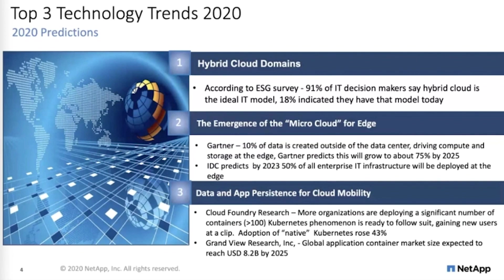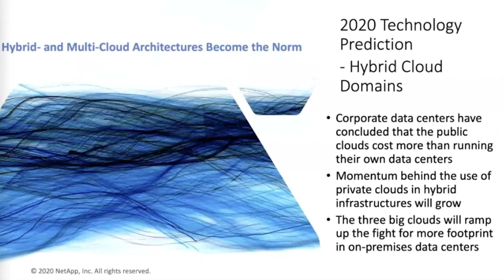My favorite trend: Kubernetes — data and application persistence for cloud mobility. Enterprises are deploying containers on-premises for more than just cloud-native apps; they're trying to solve for DevOps on-premises, not just in private clouds. We've noticed that many customers have been in trial with containers on-site, and we suspect by 2020 we'll start seeing a lot of those Kubernetes containers going into production. Today when people talk about the cloud they usually mean the public cloud, but this will change in 2020.